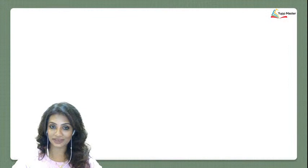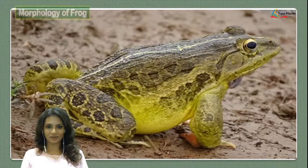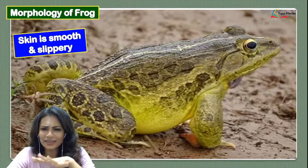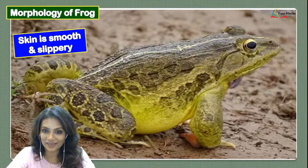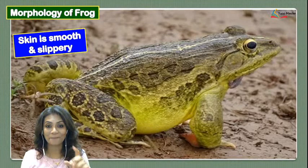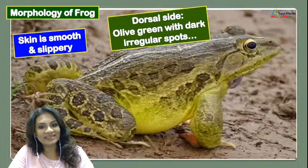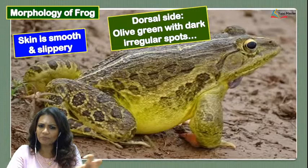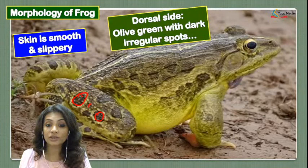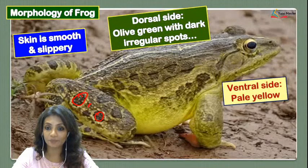Now let's look at all the points about Rana tigrina. When we see the external features of this frog, the skin is smooth and slippery — if you've ever tried catching a frog in the rainy season, it just slips away from your hands. The skin is always an olive green–brownish color on the dorsal side, with dark and irregular spots. On the ventral side it's comparatively quite pale yellow in color.